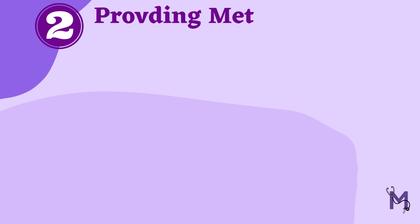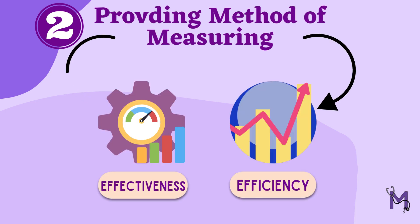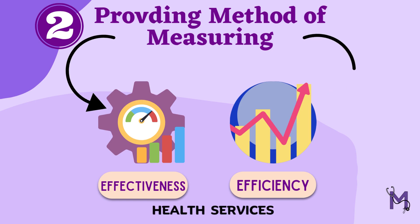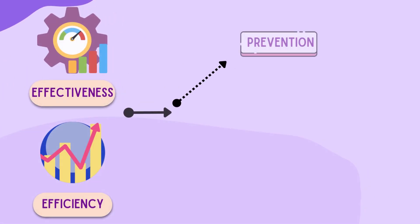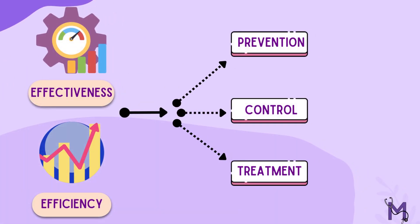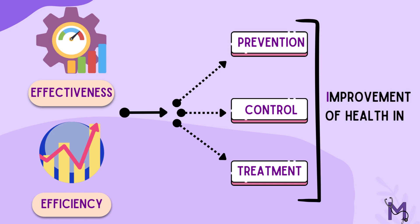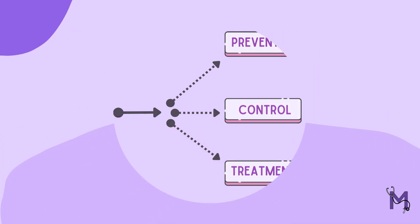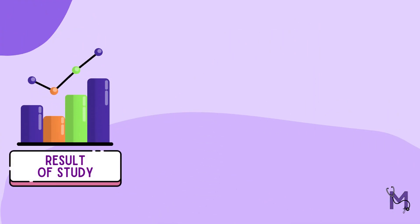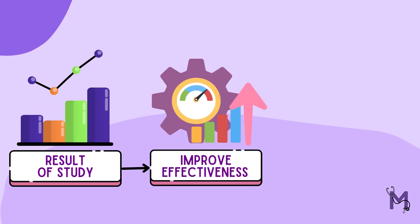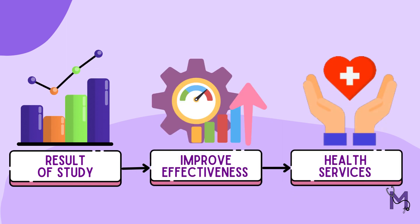Secondly, the experimental study aims at providing a method of measuring the effectiveness and efficiency of health services for the prevention, control and treatment of disease and the improvement of health in the community. This basically implies that the results from the study help us to improve the effectiveness of health services provided in the community.